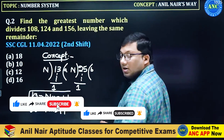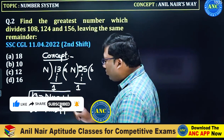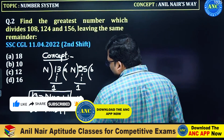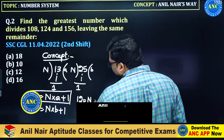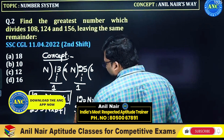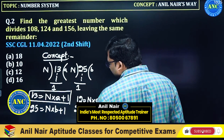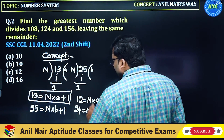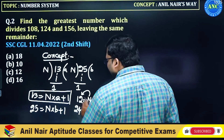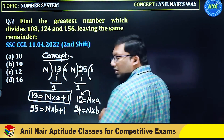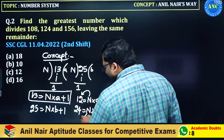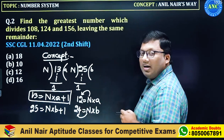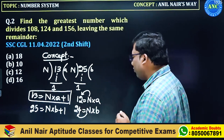N into B plus 1 — the plus 1 goes to the left-hand side. This will become: 12 is given by N into A, and 24 is given by N into B. N is a natural number, that means N should be a factor of 12 and N should be a factor of 24.